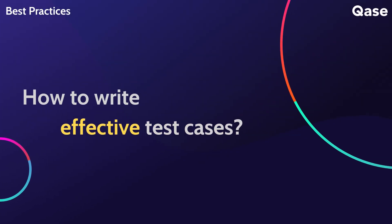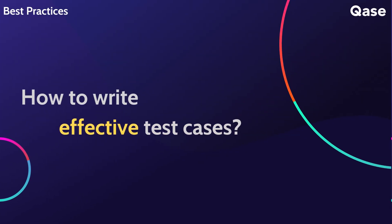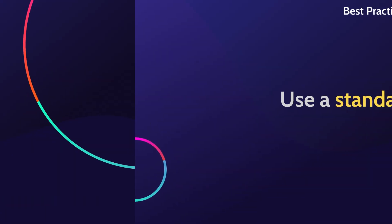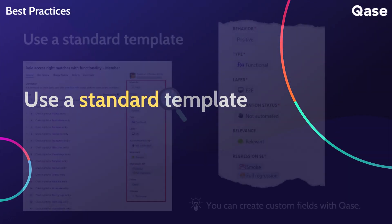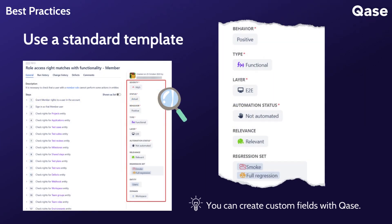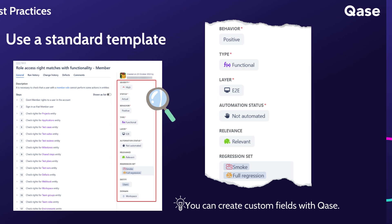Now let's look at some best practices to help you write effective test cases. Create a standardized template for your test cases to ensure consistency in formatting for easy readability. Include fields such as test case ID, test case description, test steps, expected results, actual results, and status, or anything that suits your project.